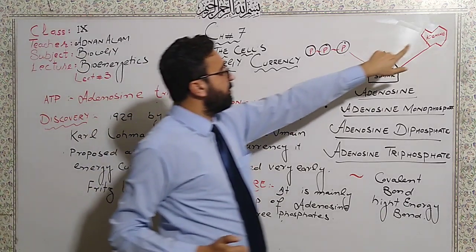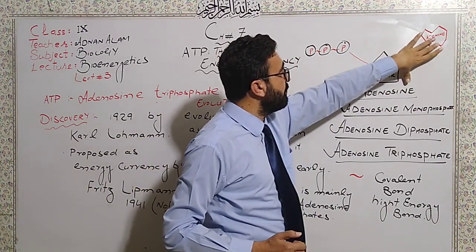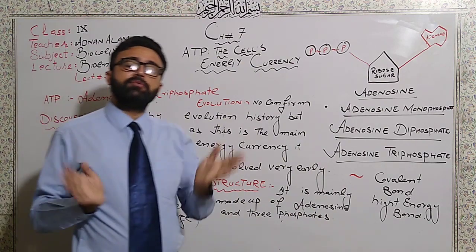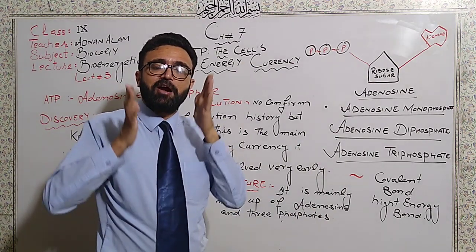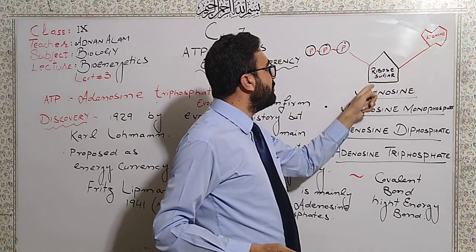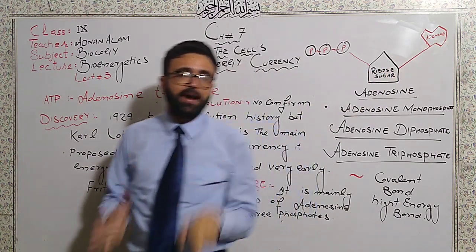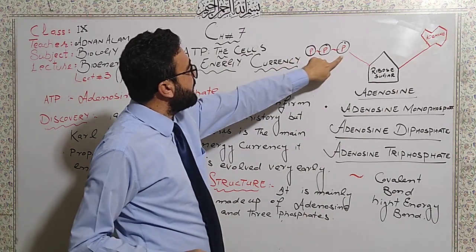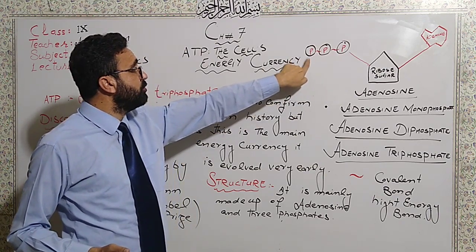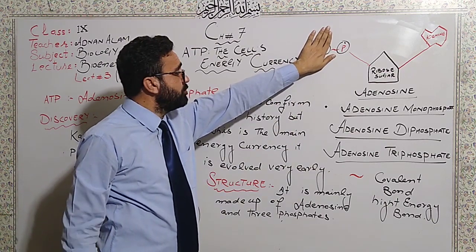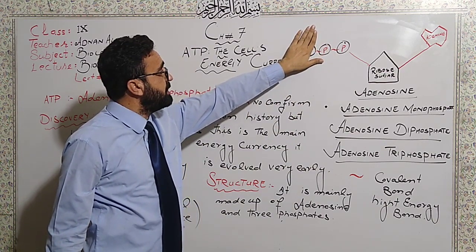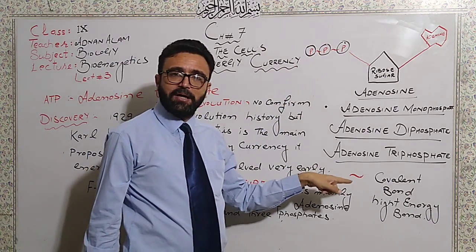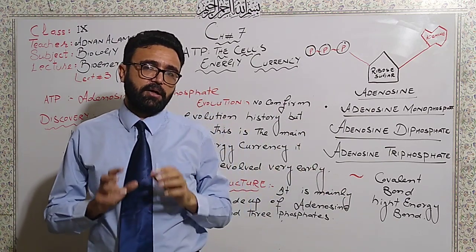When an organic phosphate is attached to a nucleoside it becomes a nucleotide, the fundamental structural and functional unit of DNA. Adenosine is the nucleoside formed from adenine and ribose — a 5-carbon sugar. With one phosphate attached it is adenosine monophosphate (AMP), with two it is adenosine diphosphate (ADP), and with three phosphate groups it is adenosine triphosphate (ATP). The bond between phosphates is a high-energy bond.